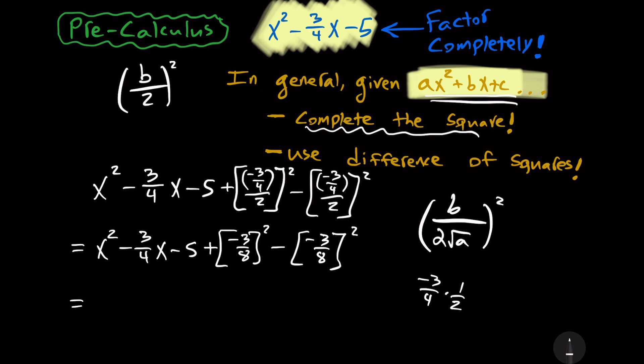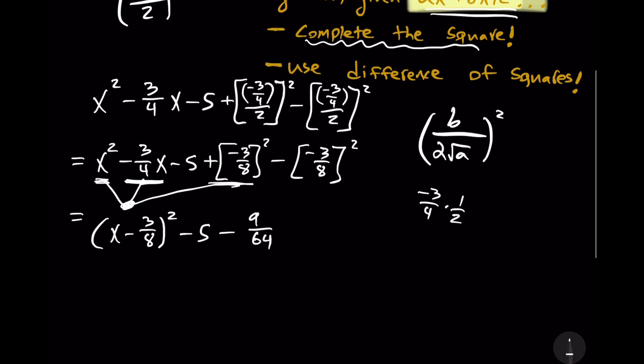So, continuing, let's take note that x squared, this minus 3 fourths x, and this right here, form a perfect square trinomial. That is the magic, so to speak, of completing the square. So, we have x minus 3 over 8, quantity squared, but then we still have that minus 5, minus, well, 3 squared is 9, 8 squared is 64, so it's minus 9 over 64.